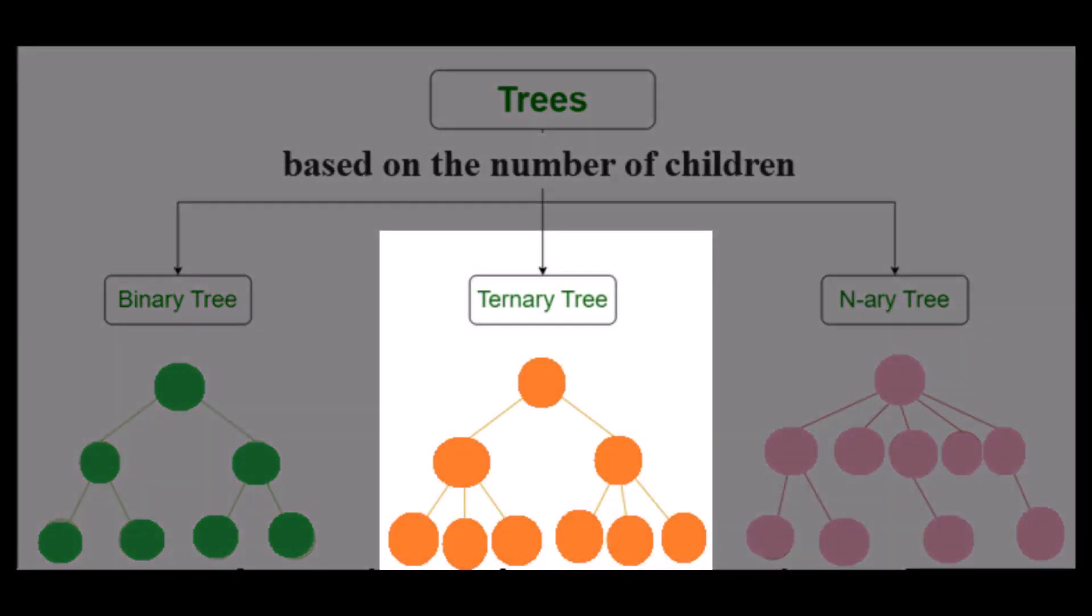And then we have ternary trees, which are the tree in which each node has at most three children nodes, usually distinguished as left, middle, and right.